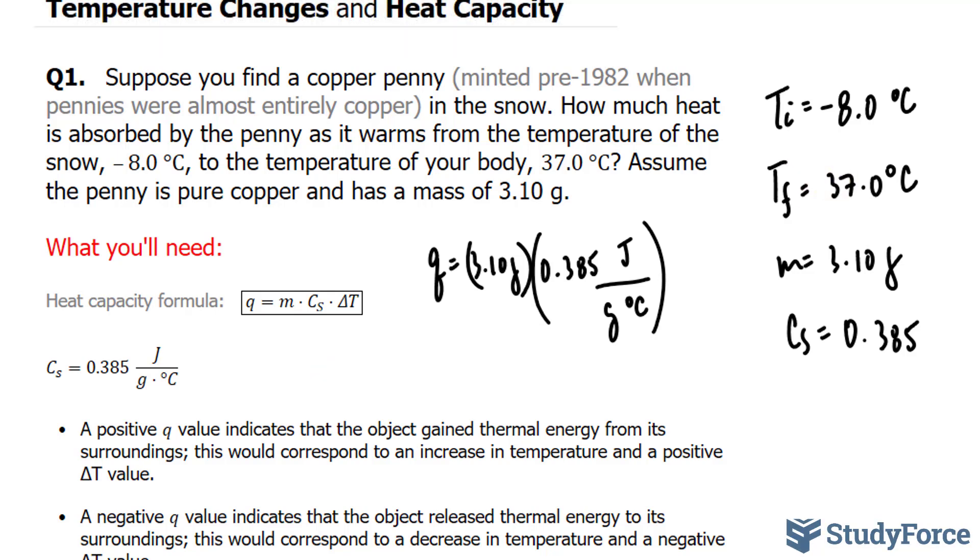Like I mentioned, delta T is found by taking this number and subtracting it by negative 8. So, we have delta T equals 37.0 minus negative 8.0. The two negatives side by side make it a positive, so we have 37 plus 8, that's 45, 45 degrees Celsius.